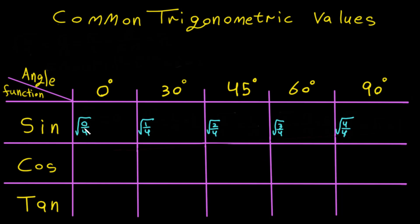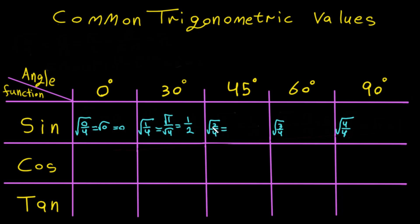The answers are simple. Square root of 0 over 4 equals 0. For the next one, we can split it: square root of 1 over square root of 4, which gives 1 over 2.